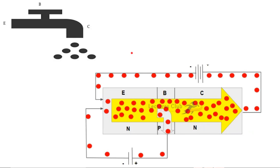Let's understand this point with the help of a very famous example of a water tap, which you will find everywhere on the internet. You can see that water is coming from the emitter, base is controlling the flow of water, and water is coming out of the collector. So when we open the handle of the tap, water will come into the emitter and will come out from the collector.